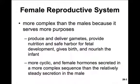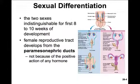The female reproductive system is much more complex than the male's, because it serves many more purposes. The male only needs to produce and deliver gametes, but the female has to do that as well as provide nutrition and safe harbor for fetal development, give birth, and then nourish the infant. In addition, the female reproductive physiology is much more cyclic, and thus hormones are secreted in a more complex sequence compared with the relatively steady secretion of regulatory hormones in the male.